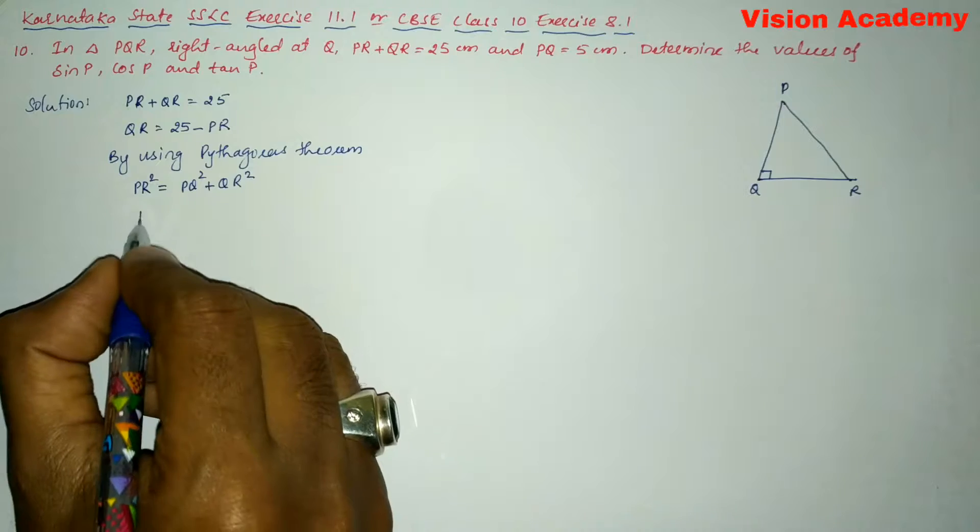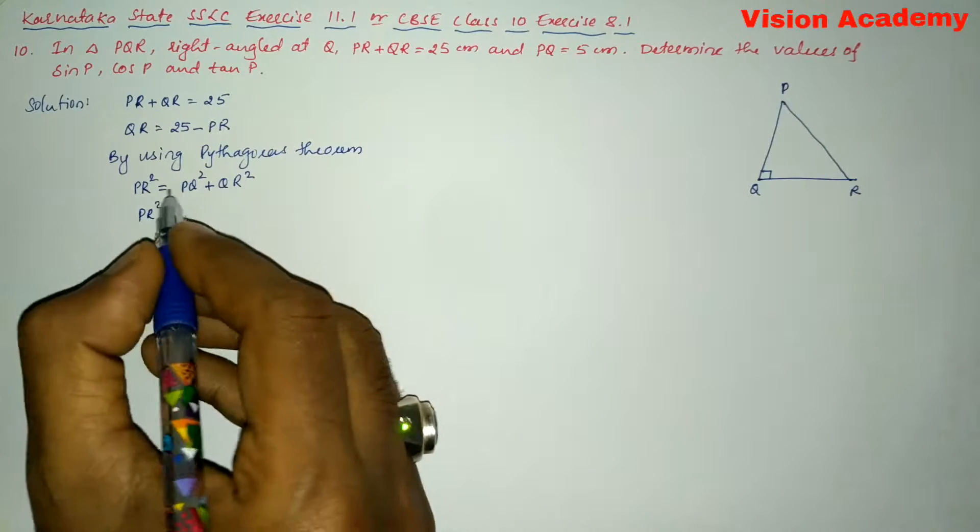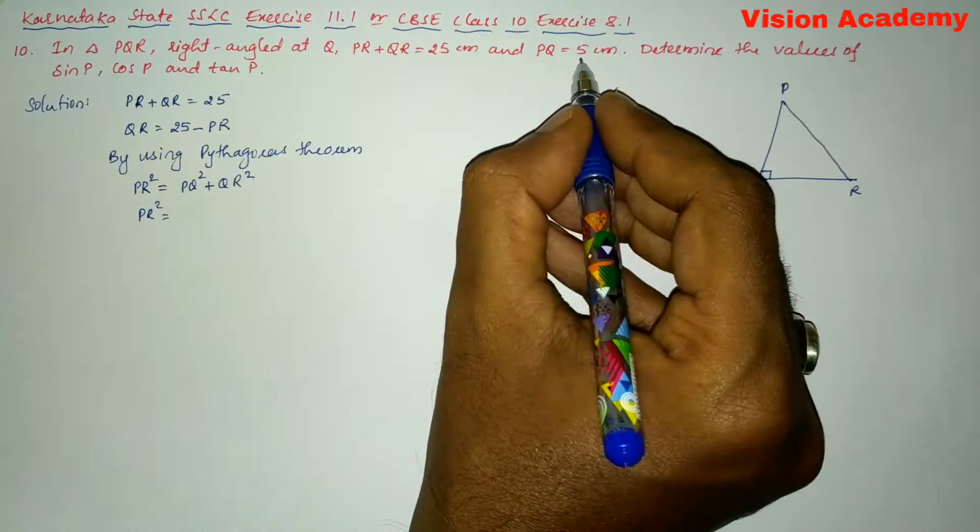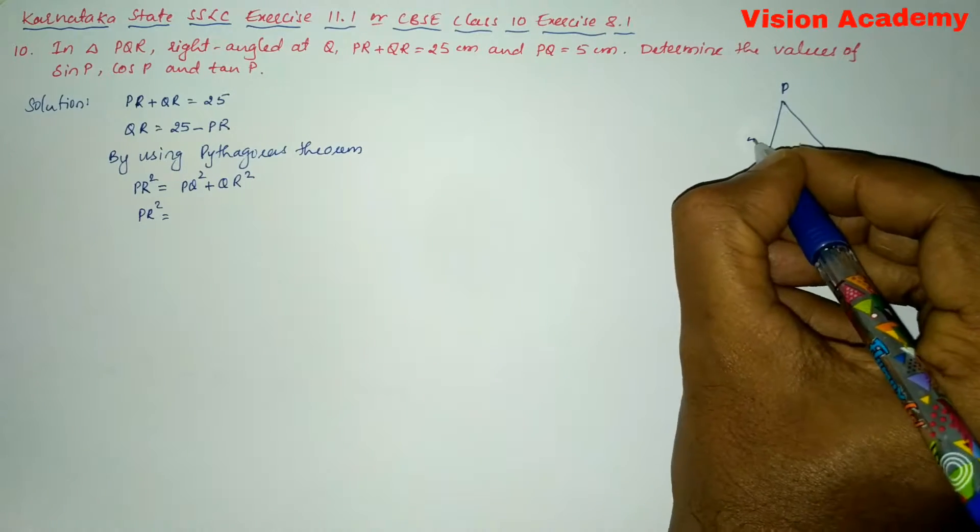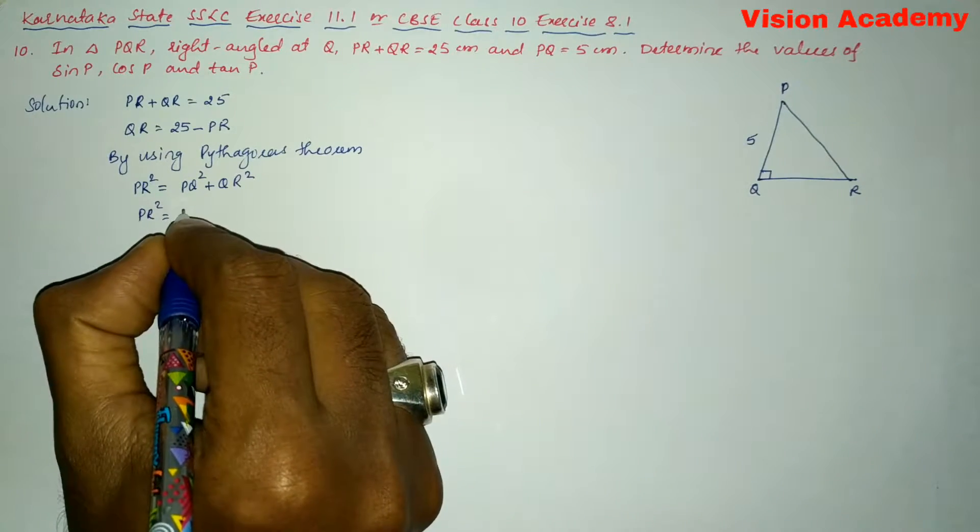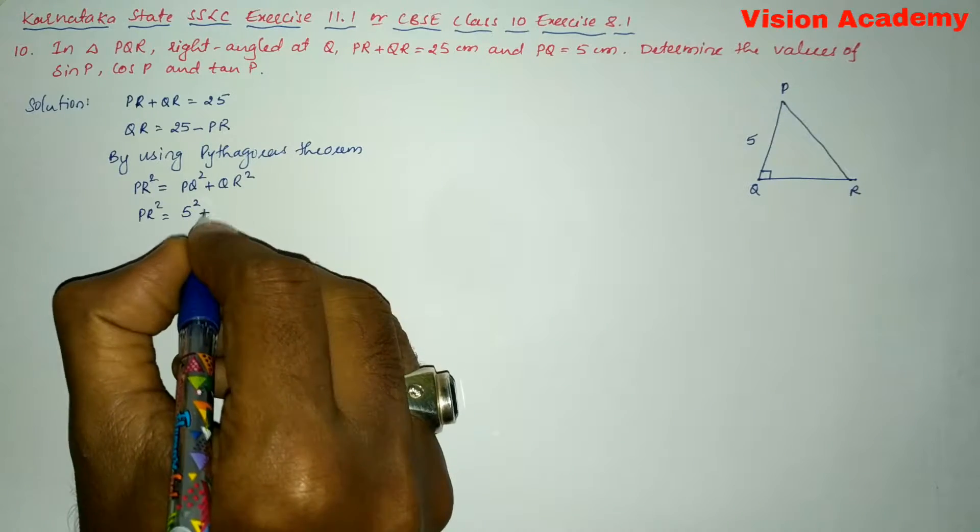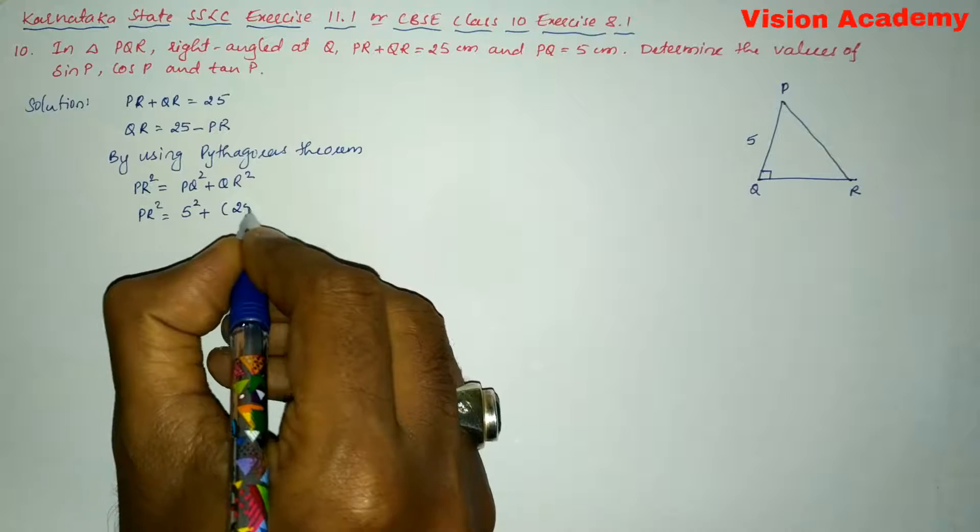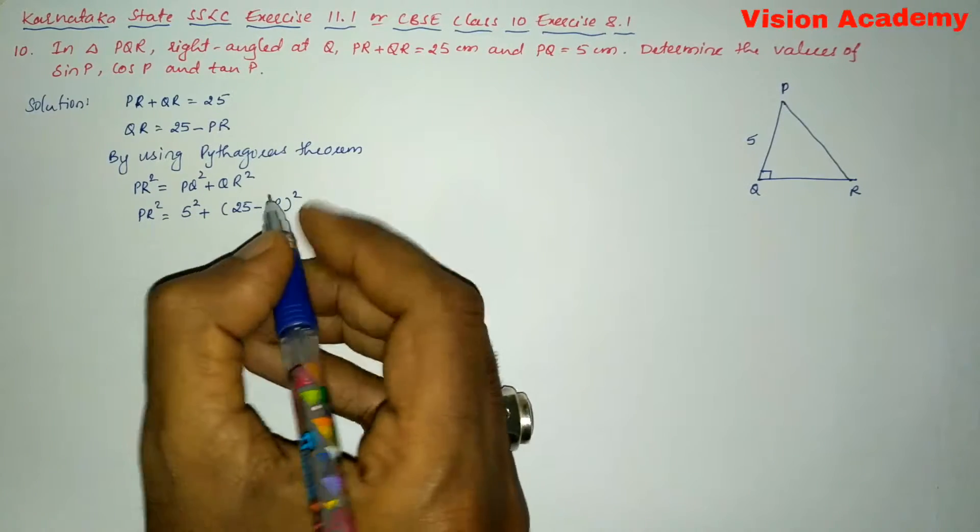Here we are going to write PR square is equal to PQ is 5 because it is already given. Here you can write this one as 5 centimeter. So this is 5 square plus QR is 25 minus PR. Here we can write 25 minus PR whole square.